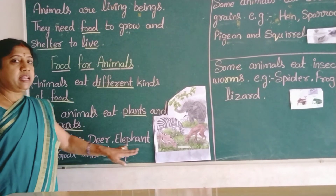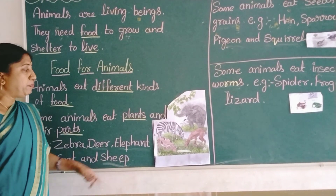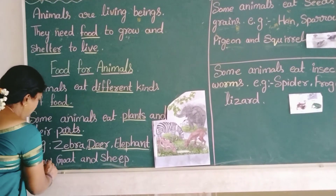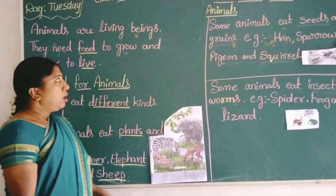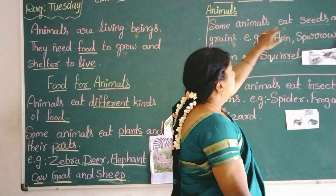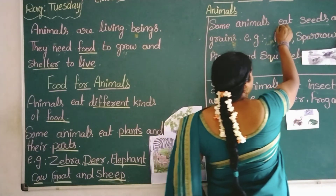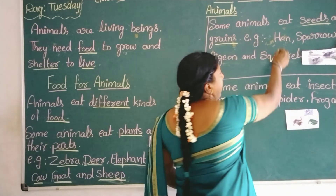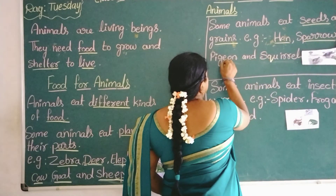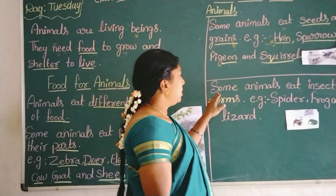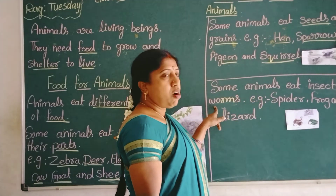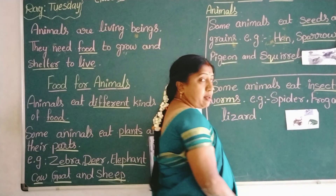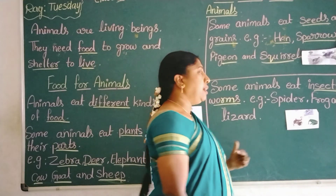Example: zebra, deer, elephant, cow, goat and sheep. Some animals eat insects or worms. Example: hen, sparrow, pigeon, squirrel. Next, some animals eat insects or worms. Example: spider, frog and lizard.